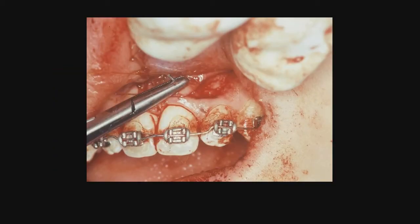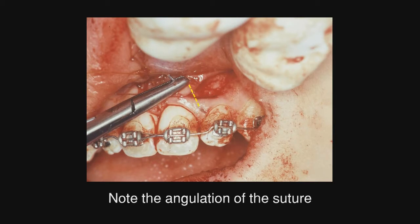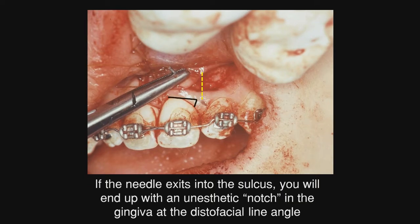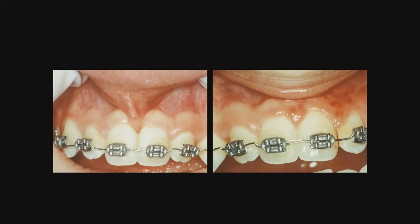The next suture is on the distal, and particularly I want you to note the angulation of that suture. We are going through the flap, but notice how obliquely we make that so it exits in the fat of the papilla where you have a lot of tissue. Here is where I have made a mistake: if you suture vertically, too often you will exit in the sulcus, and the black line shows what the tissue is going to look like on initial healing — you will have an aesthetic result. So always angle the suture as I have pointed out.